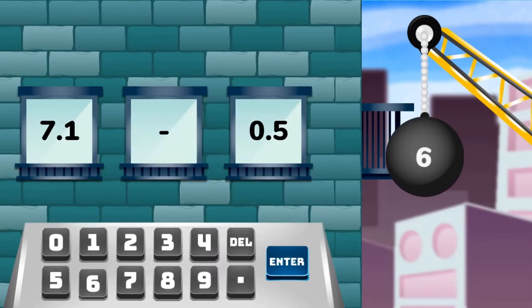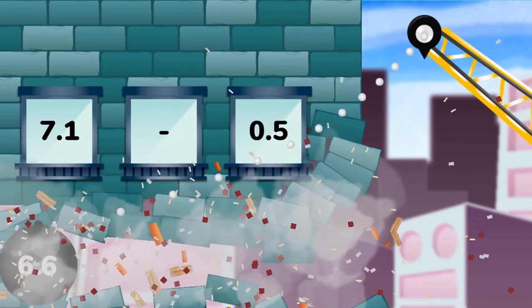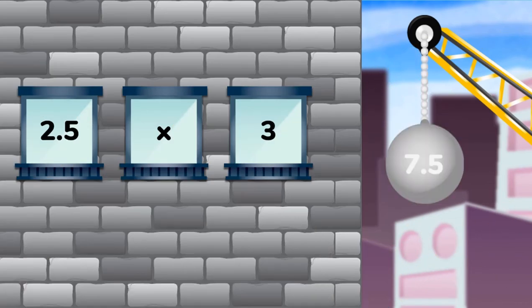The wrecking ball will turn grey if your answer is correct. Hold and drag on the wrecking ball to then destroy the entire building.